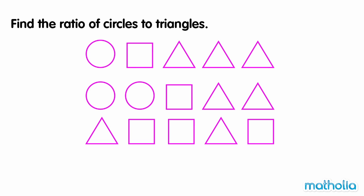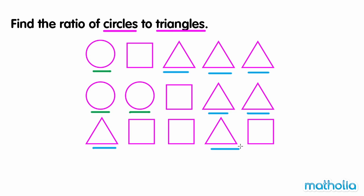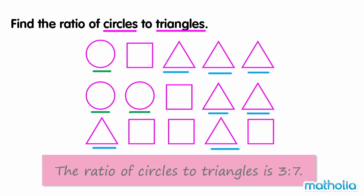Find the ratio of circles to triangles. There are three circles and there are seven triangles. So the ratio of circles to triangles is three to seven.